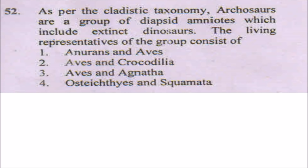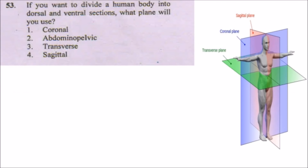The next question is: if you want to divide a human body into dorsal and ventral sections (belly and back), which plane would you use? There are three planes for dividing the human body: the coronal plane divides the body into dorsal and ventral parts; the sagittal plane divides the body into left and right; and the transverse plane divides it into upper and lower parts. So the answer will be the coronal plane.